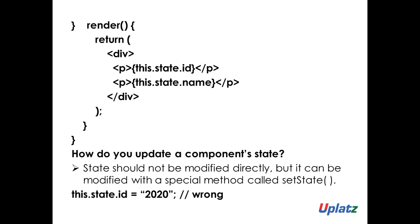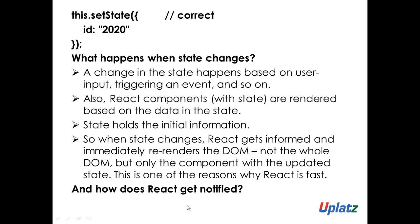How can we update the state component? Props you cannot update — props is read only. But state you can update; you can set whatever you want. However, state cannot be modified directly — it has a special method called setState. So this.state.id = 2020 is wrong. You need to use the special method: this.setState, opening and closing with ID 2020 — that would be the correct approach.